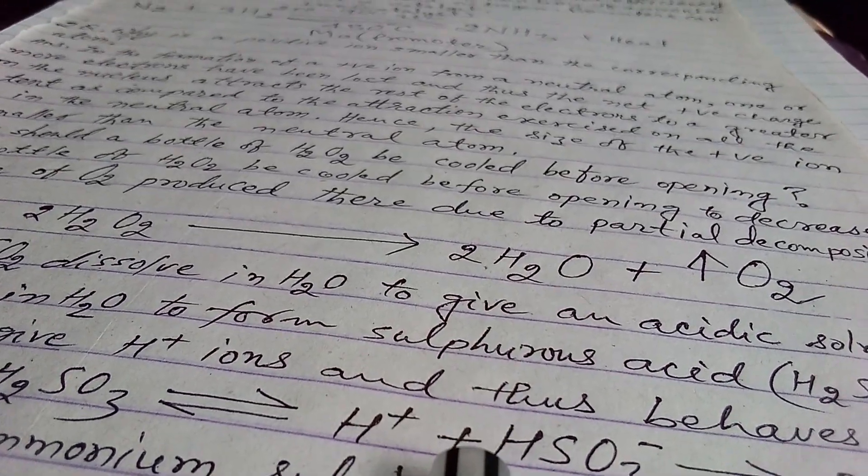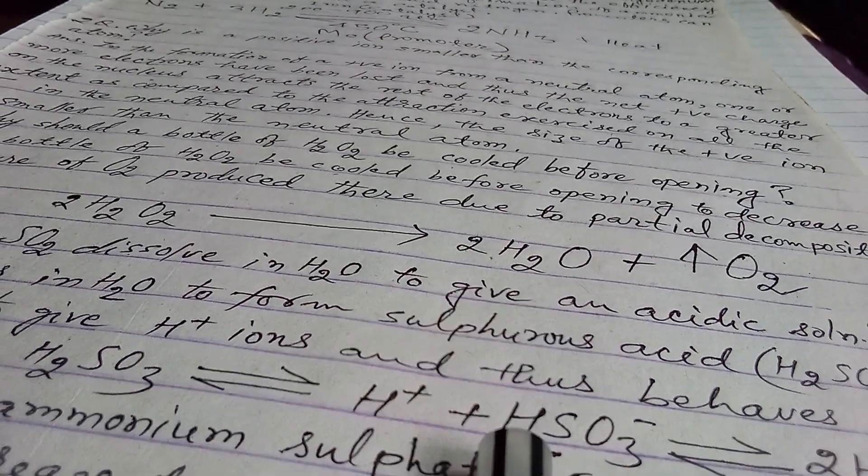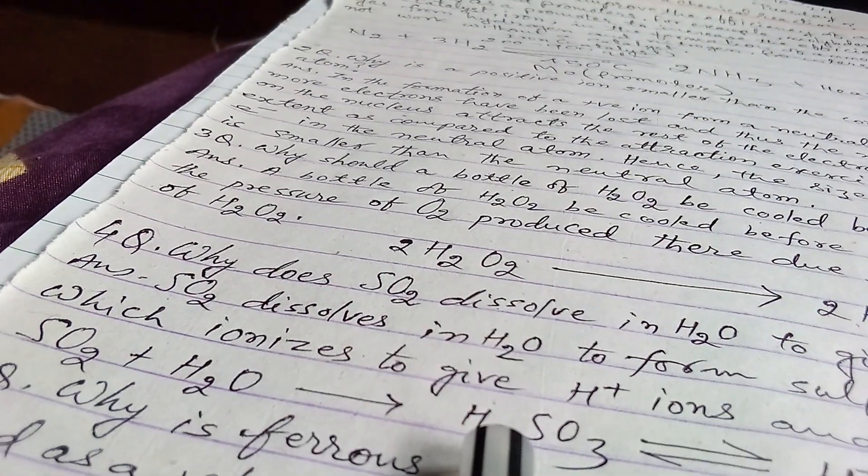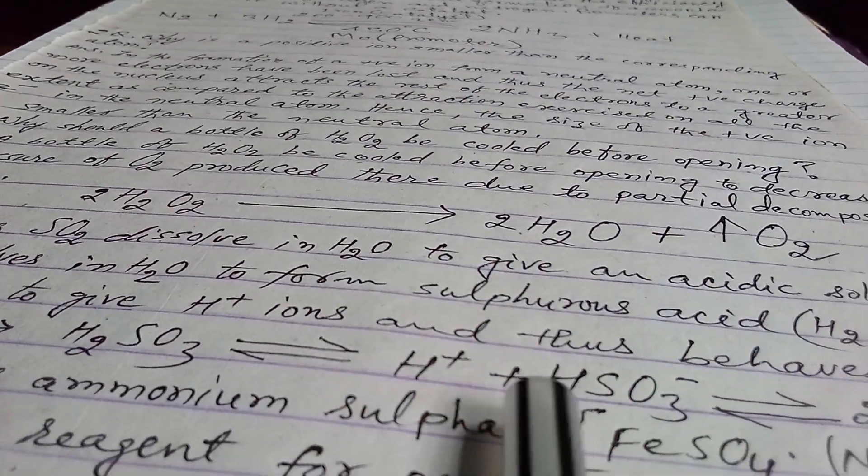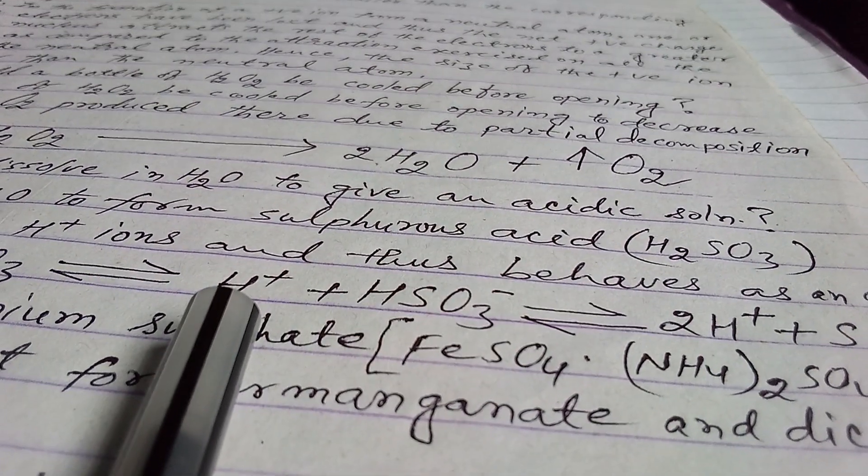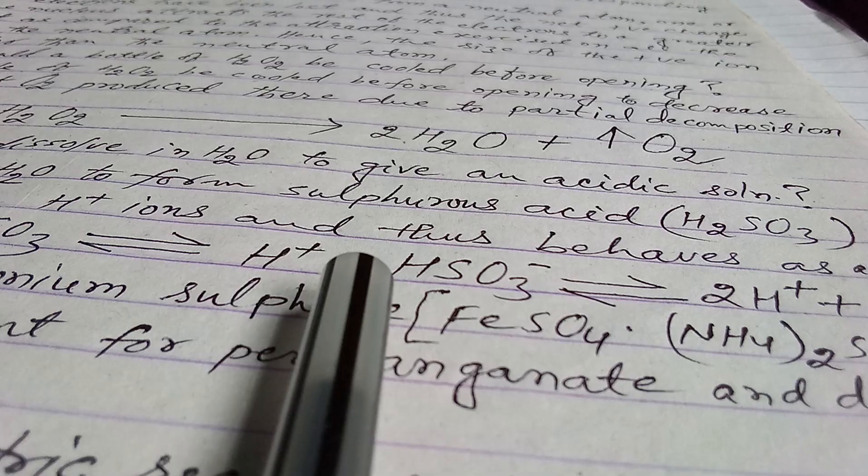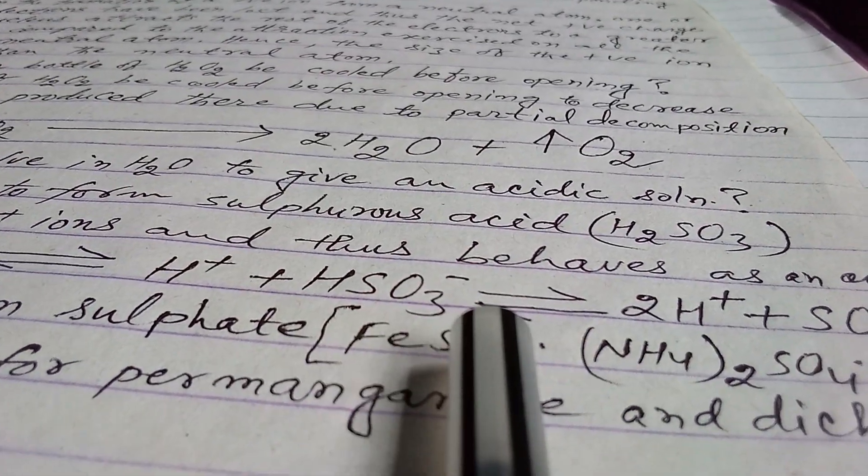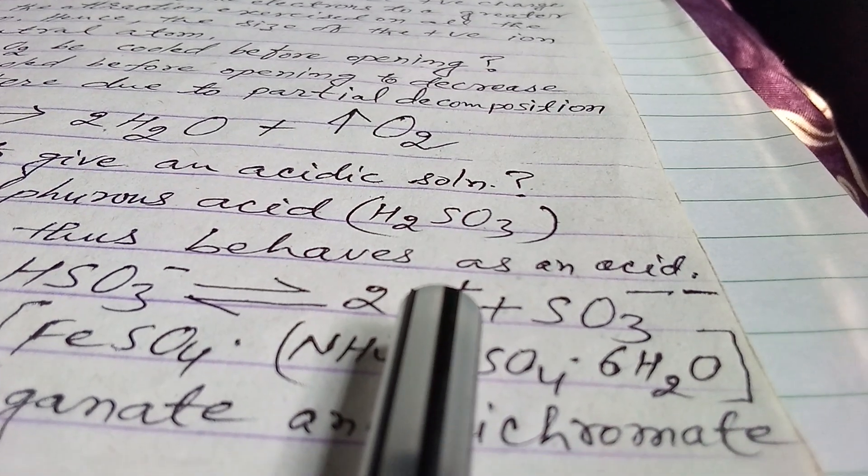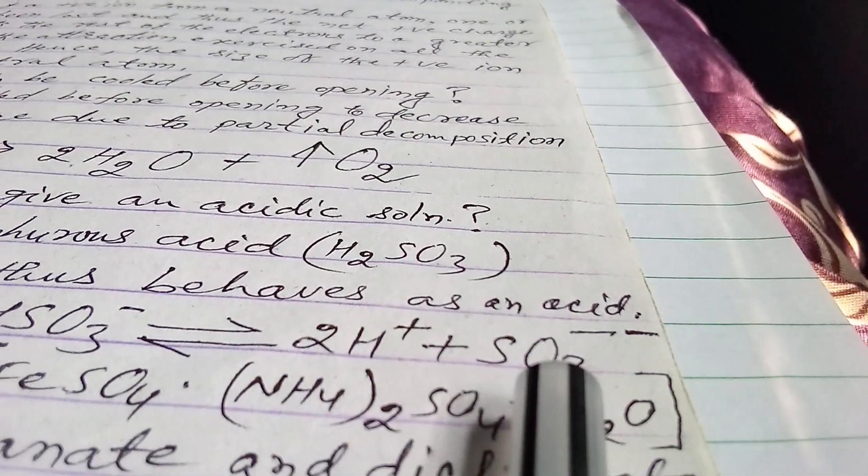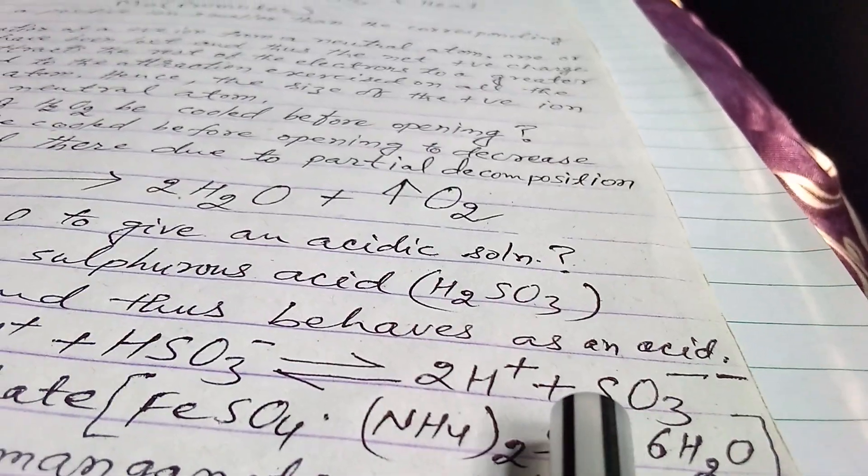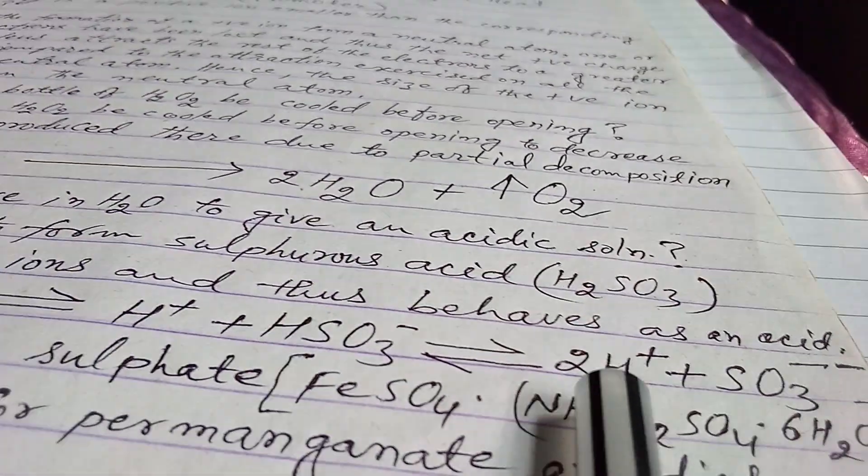It is not stable, it is unstable reaction. So again from this we get sulfurous acid and again these two ions, hydrogen is a cation and HSO3 is an anion. Again this is reversible and it gives us two hydrogen ions and SO3 that is sulfite ions. It is also reversible, it is not stable.